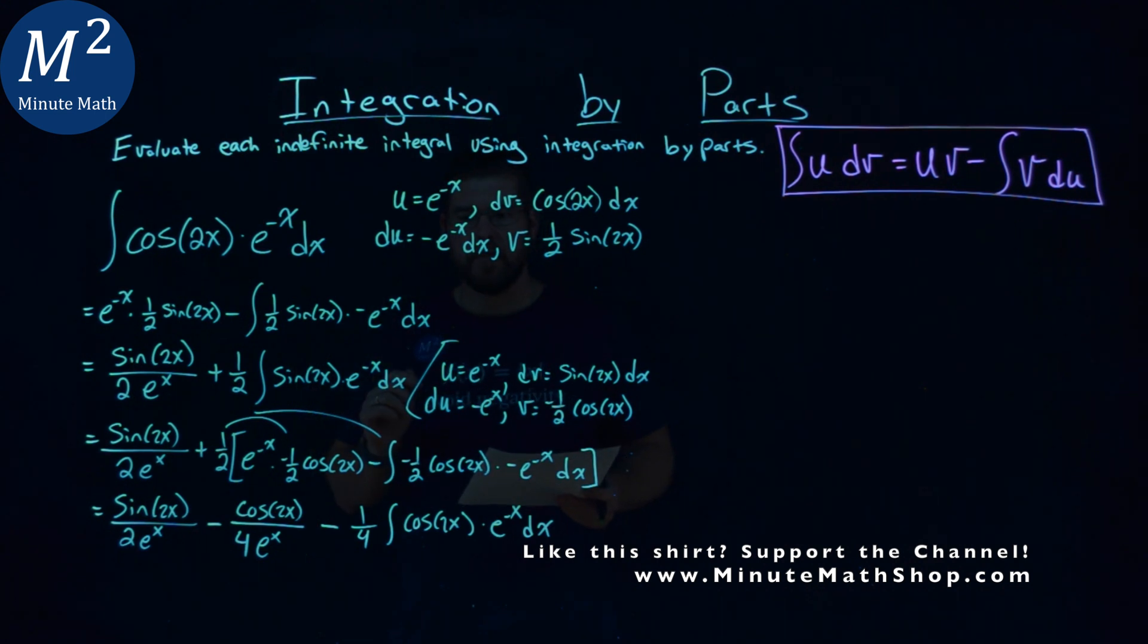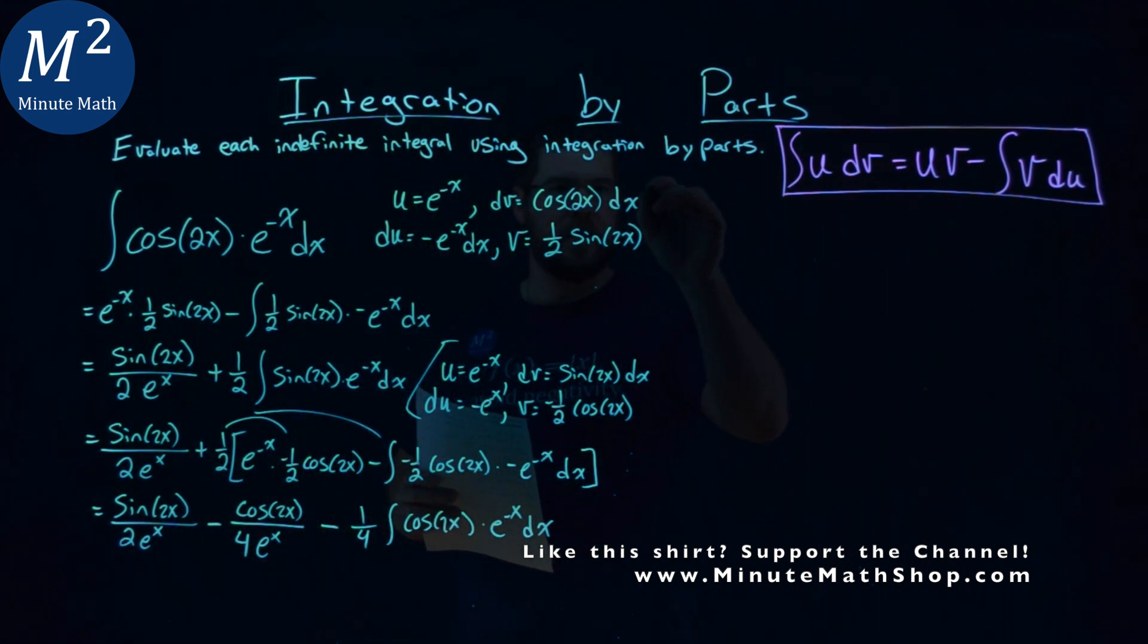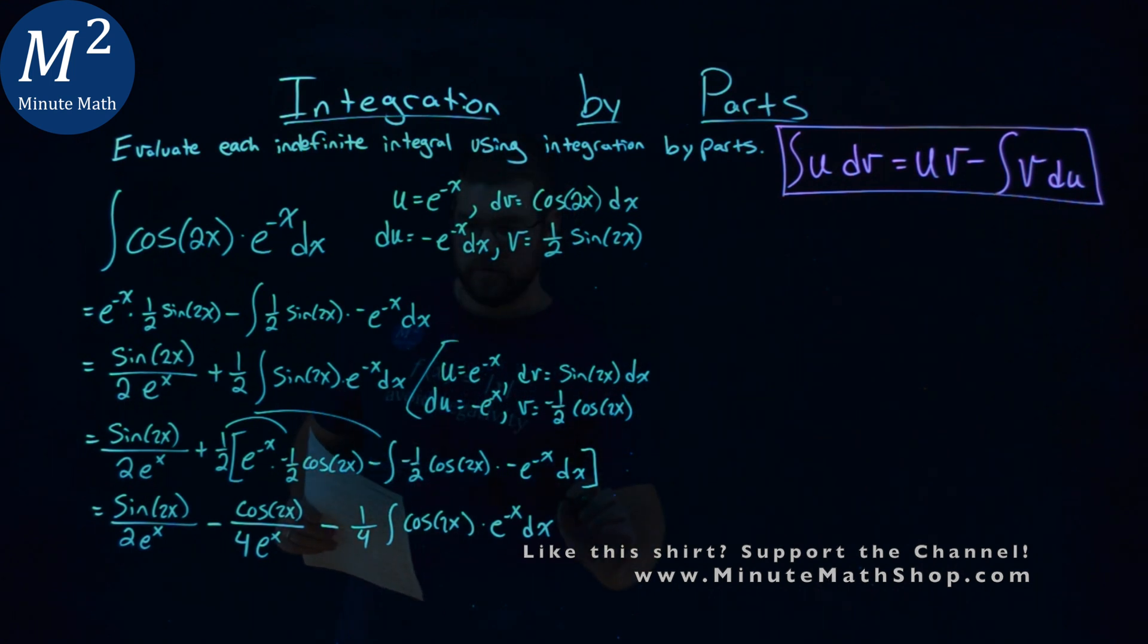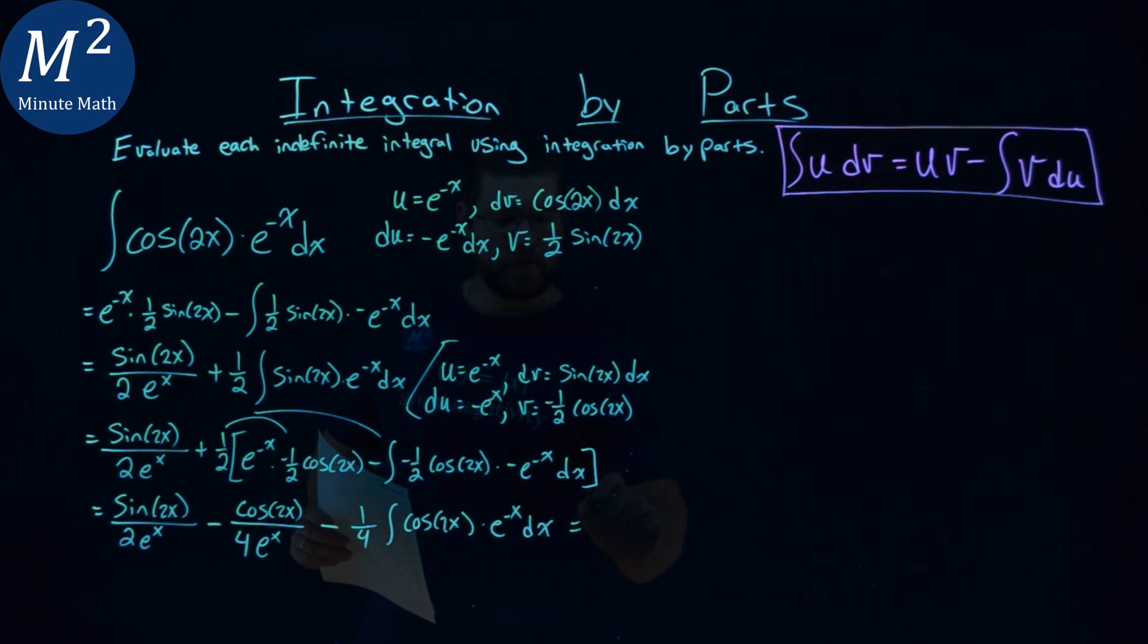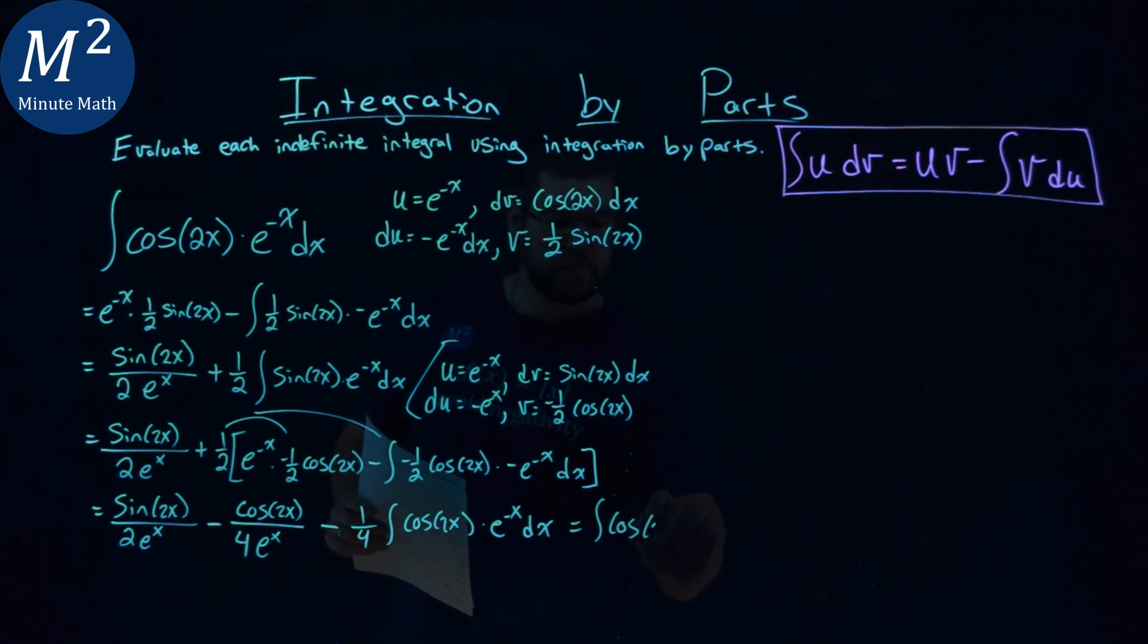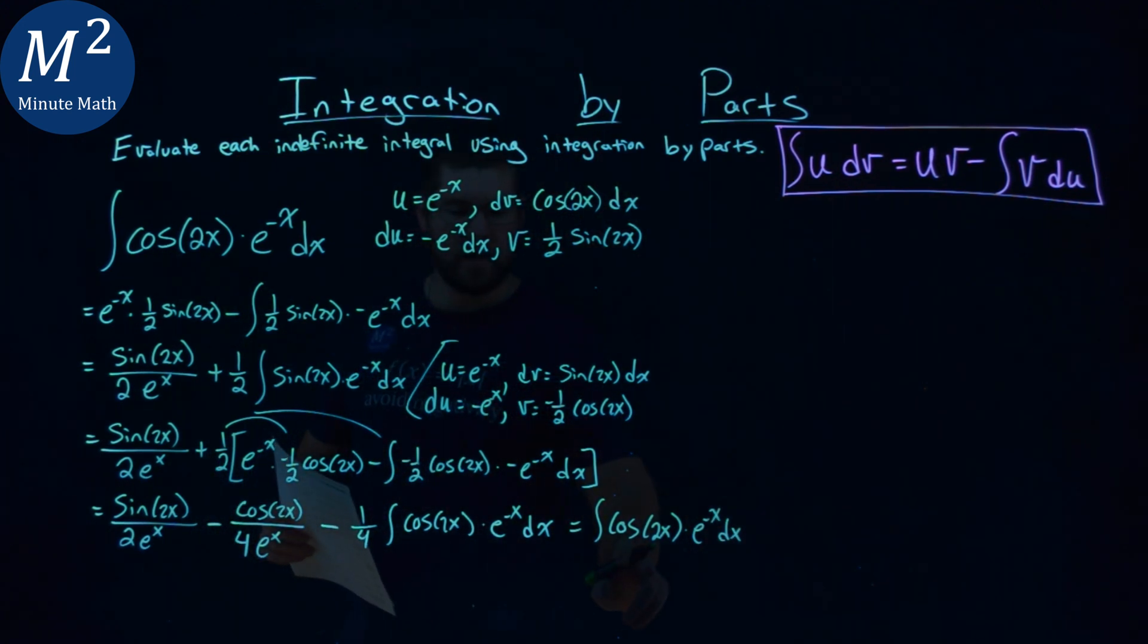But notice here. This is equal to that original integral, this whole thing. So if we rewrite this, I'm going to try to write it small so it all fits out right here. This is equal to the integral of that cosine of 2x times e to the negative x dx. Right? Just set it equal from the beginning down here.